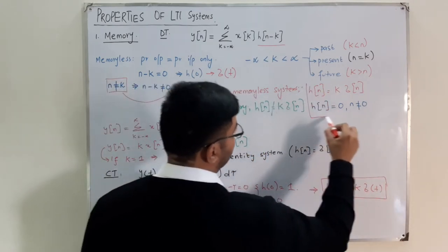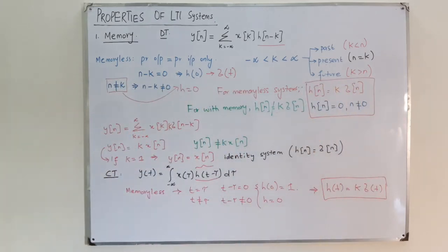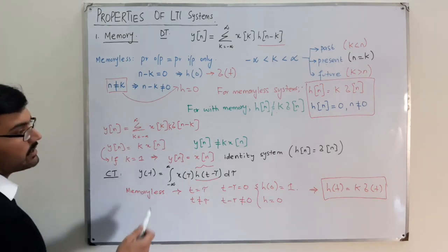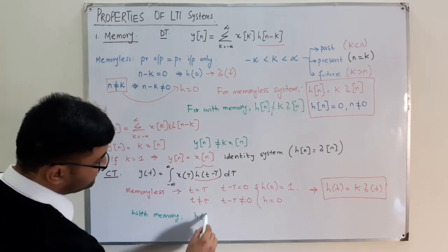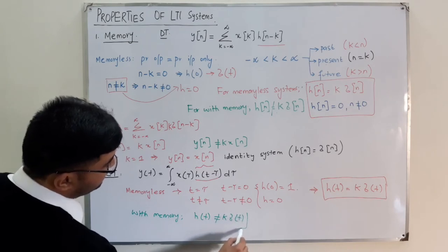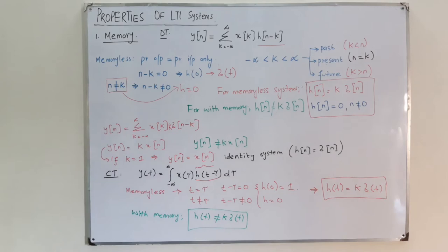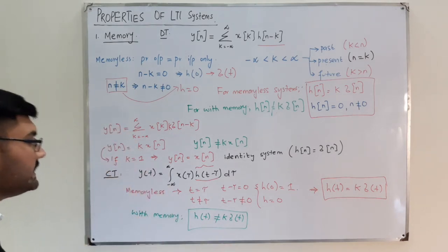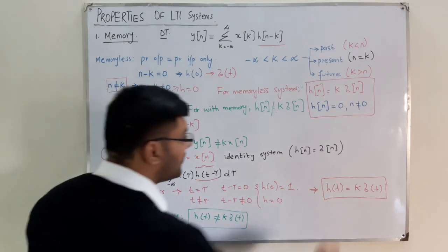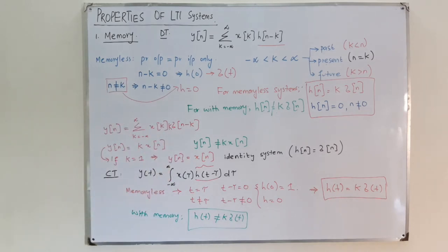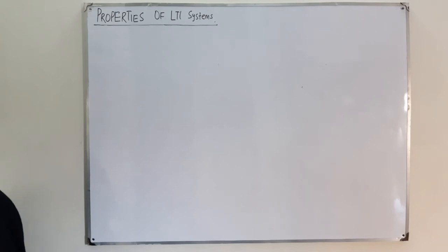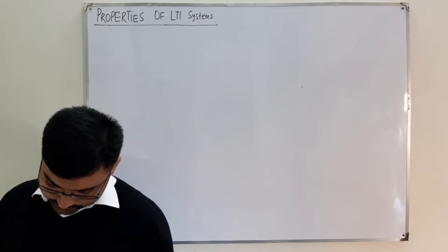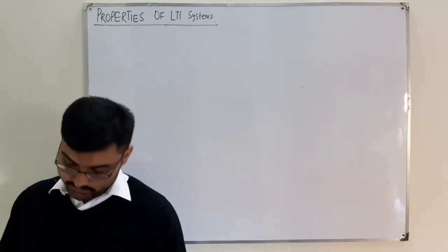That is the criterion: h(t) = k·δ(t) for memoryless continuous time systems. For systems with memory, h(t) is not a multiple of the impulse function. The identity system has impulse response δ(t). That covers the first property. You can refer to the book for further details, and you can ask questions in the comment section anytime.